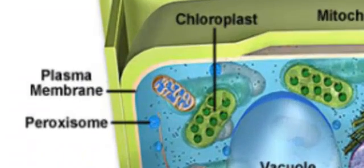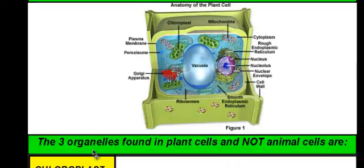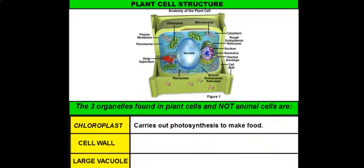The chloroplasts are located up here at the top, and they are the green organelles that sit inside of the cytoplasm of the plant. And that's what makes plants green. Chloroplasts are important because they carry out photosynthesis to make food. They have a special pigment called chlorophyll inside of them to help carry out this process.